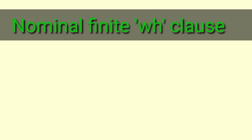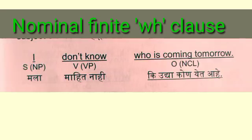Now let's understand the nominal finite WH-clause. A nominal finite clause introduced with the help of WH words — what, when, why, how, whether, etc. — or sometimes 'if,' is called a nominal finite WH-clause.